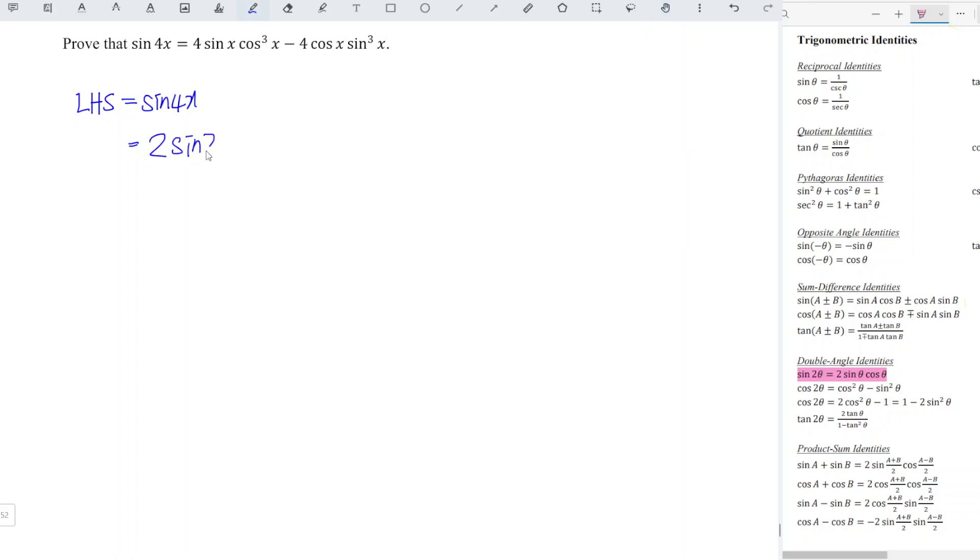So we should obtain 2 sine 2x cos 2x. Apply again the double-angle identity and we should obtain 2 sine x cos x, and apply the double-angle identity for cosine function.